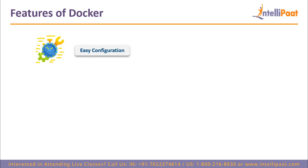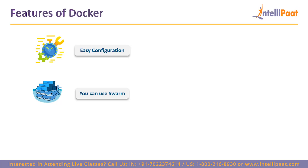Now let's discuss the features of Docker. First, easy and faster configuration — you can easily deploy code in less time and effort. Since Docker can be used in a wide variety of environments, infrastructure requirements are no longer linked with the application environment, helping in configuring the system easily and faster. Second, Docker Swarm — a clustering and scheduling tool for Docker containers. Swarm uses the Docker API as its front end, helping us control a cluster of Docker hosts as a single virtual host. It is a self-organizing group of engines used to enable pluggable backends.